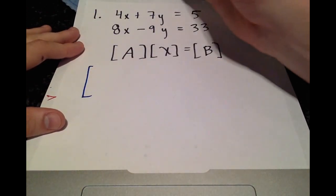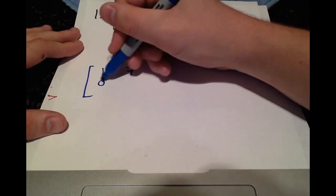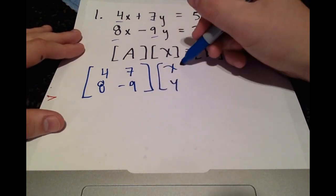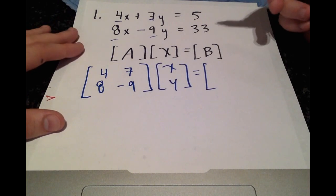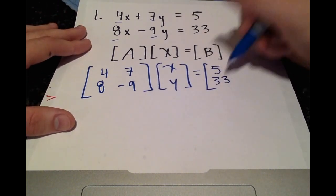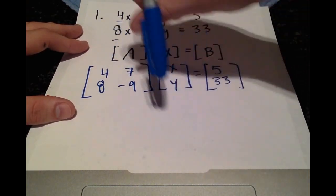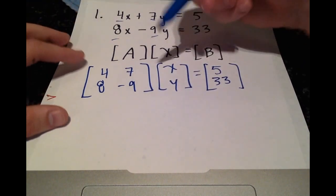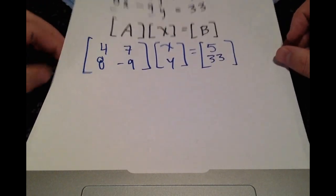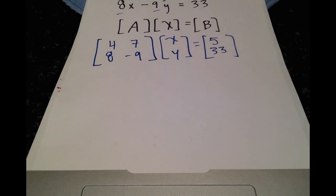So it's just going to be the coefficients on the left side. So 4, 7, 8, negative 9. X is going to be the variables we want to solve for. X and Y. B is going to be the right-hand side of the equal sign. 5 and 33. And you can check this. Multiply the X and the Y. 4, 7, 8, negative 9. And it looks exactly, that's how you go back from matrix to equation form. Okay. That was the first step. Not too difficult.